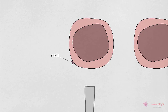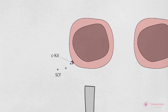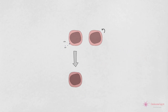Nous venons de parler du C-Kit comme marqueur utile pour identifier les cellules souches hématopoïétiques. En réalité, le C-Kit est un récepteur d'une cytokine appelée SCF, ou facteur de croissance de cellules souches, qui favorise le développement de progéniteurs multipotents.